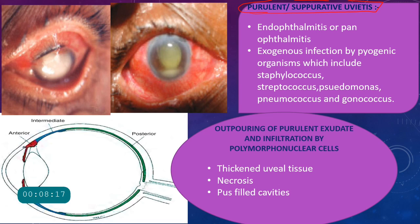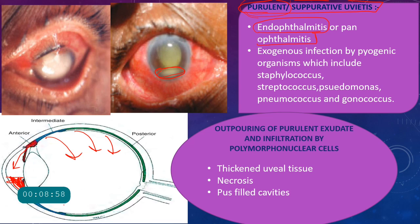In suppurative or purulent uveitis, there is pus deposition — you will see a hypopyon in the anterior chamber. The classic examples are endophthalmitis and panophthalmitis. In endophthalmitis, there is inflammation and infection of the uveal tissue with purulent discharge pouring into the anterior chamber forming hypopyon, and purulent exudation in the vitreous. When the infection involves even the Tenon's capsule, it is called panophthalmitis.